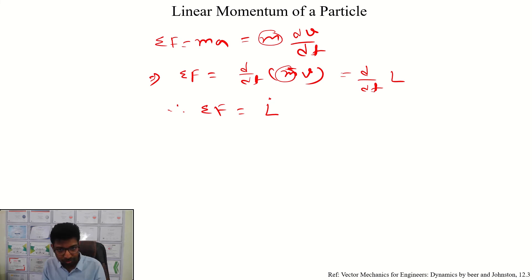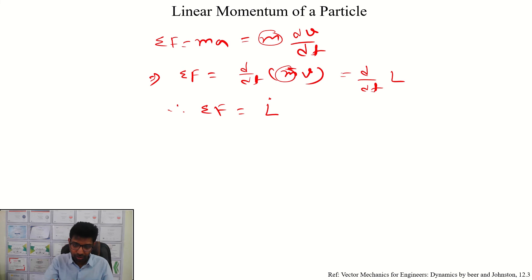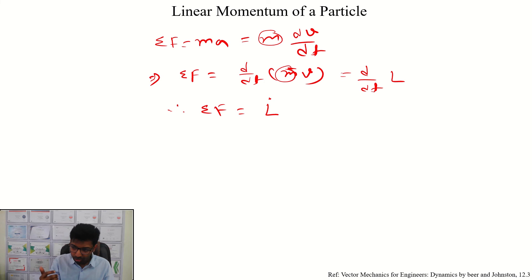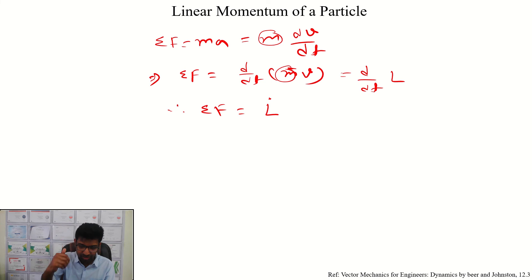A constant mass is not always possible. For example, the rocket — the rocket is burning fuel, so eventually the mass is changing over time. In those particular cases where the mass is not constant, these equations are not directly applicable.